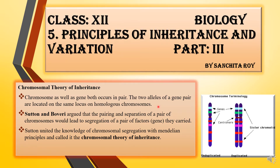According to the chromosomal theory of inheritance, chromosomes as well as genes both occur in pairs. Inside the human body, the cells contain chromosomes and the chromosomes are in a paired condition, the way the genes are paired together. The two alleles of a gene pair are located on the same locus on the homologous chromosomes. For example, capital T — both alleles are supposed to be located in the same locus, that is, the same place.